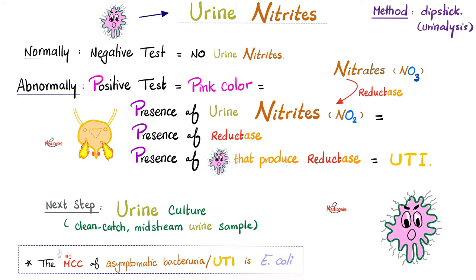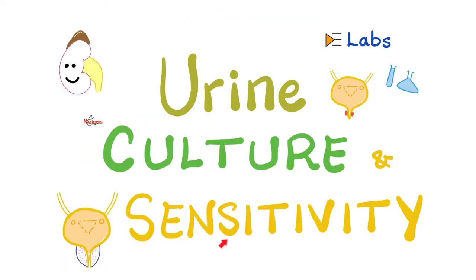The presence of reductase means there are bacteria in your urine capable of producing that enzyme, which means you have a urinary tract infection. Many bacteria can make reductase — mostly gram negatives, because the most common cause of urinary tract infections is Escherichia coli, which is a gram-negative rod. If you find nitrites and/or leukocyte esterase in the urine, the next step is a urine culture to identify the exact bacteria that caused the UTI. For the urine culture, we need a clean-catch midstream urine sample.